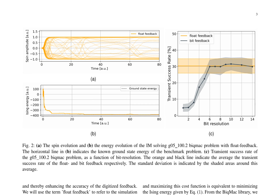Float feedback refers to simulation data obtained using a non-digitized feedback term, while bit feedback uses a digitized feedback term. Digitization involves rounding input values to their nearest bin value within a predetermined interval subdivided into equally spaced bins. The bin width is determined by the bit resolution, ranging from 1 to 14 bits. The authors employ the max-cut benchmark problem from the BIC-MAC and G-SET libraries to determine the required minimum bit resolution. Max cut is an NP-hard problem that aims to maximize the cut number C by separating a graph into two parts, with the cost function equivalent to minimizing the Ising energy given by equation 1.